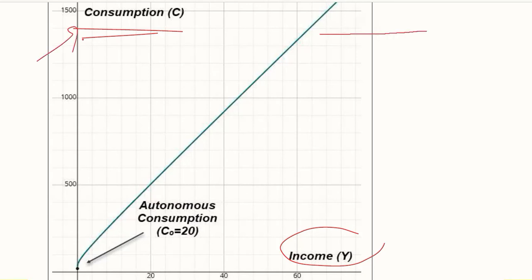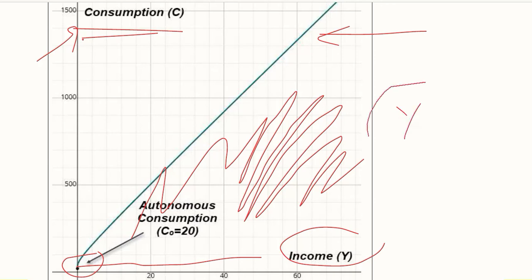The relationship between the two is positive. The autonomous level of consumption is not at the origin but slightly above it. Above that level, all consumption is induced with respect to Y. This consumption function is in accordance with our theory of consumption.